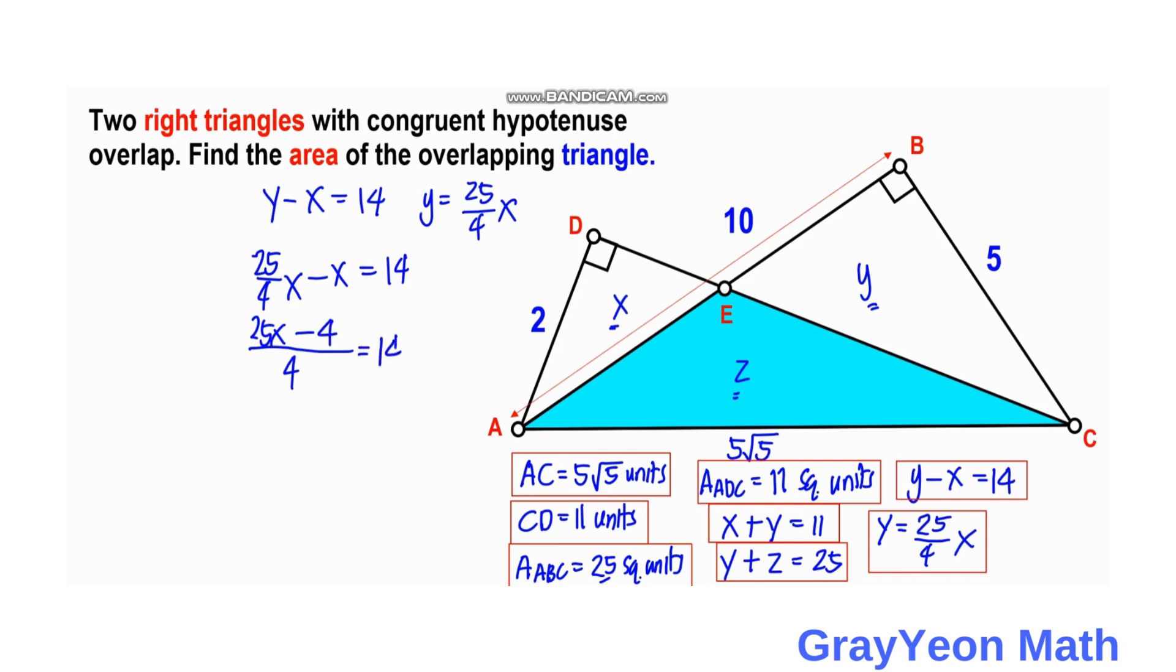This becomes 4, so it equals 14. 25X minus 4X is 21X equals, we just cross multiply, 4 times 14 is 56. If we divide both sides by 21, we can divide by 7, so this becomes 8 and this becomes 3. So X equals 8 over 3 square units.